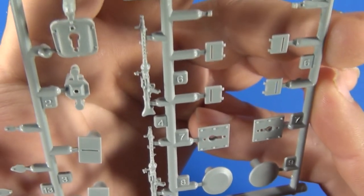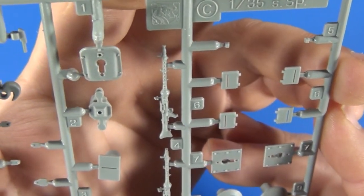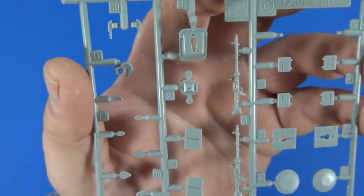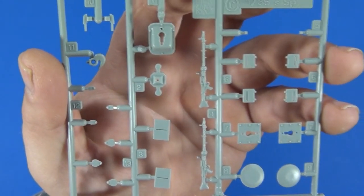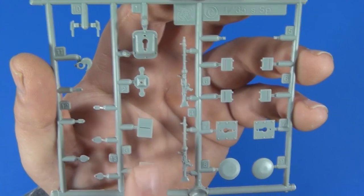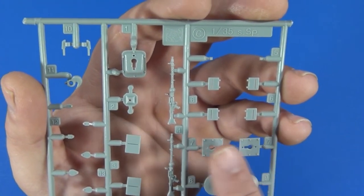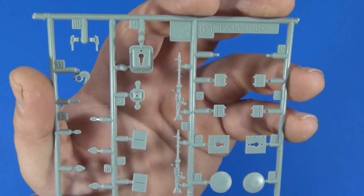The ends of the barrels are not hollowed out, so we'll have to drill those out. Also included on this sprue are the tow hooks there, and then a couple pieces for the bumper stops. And these are also the ports for the MG 34s.